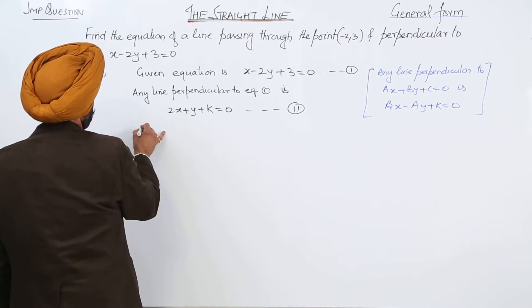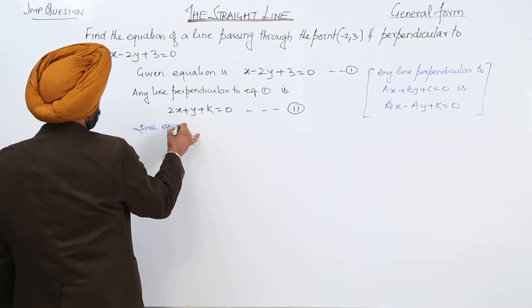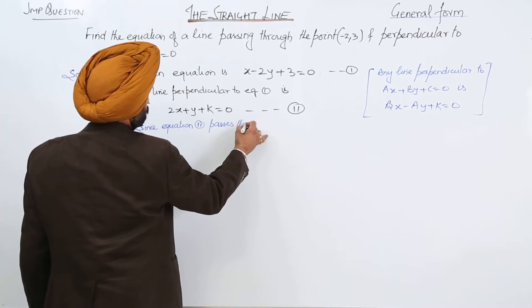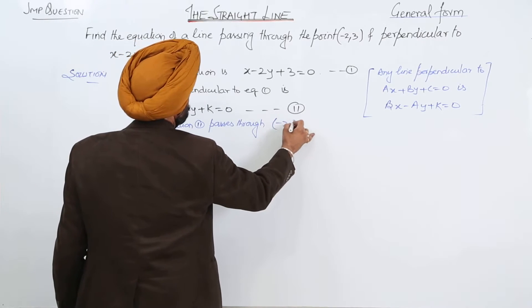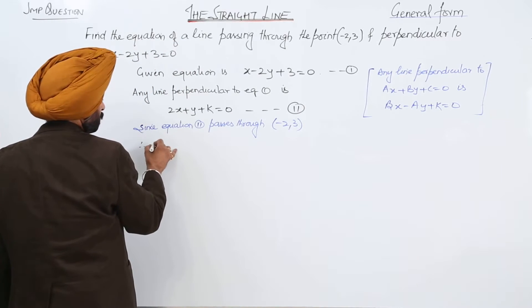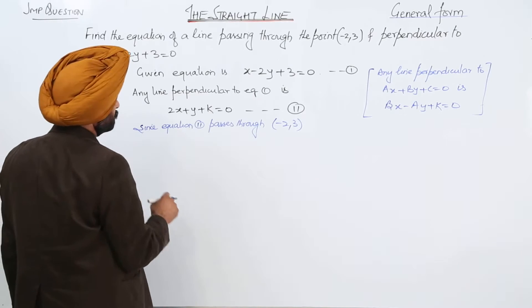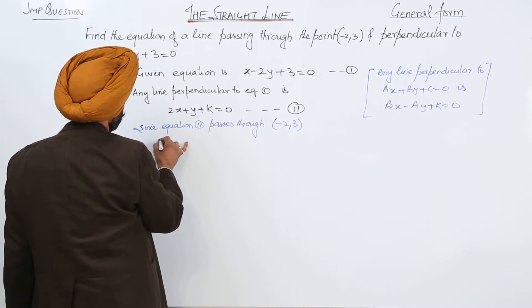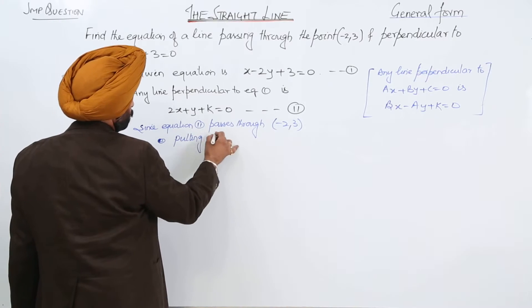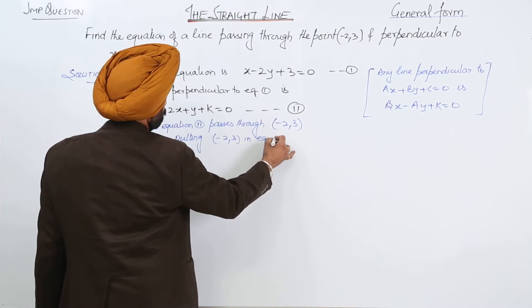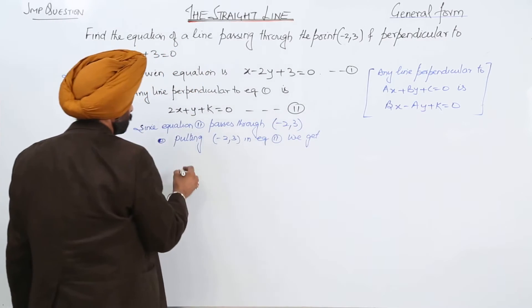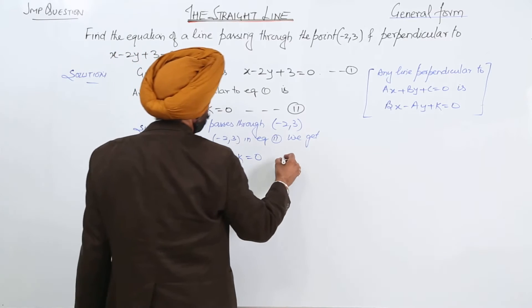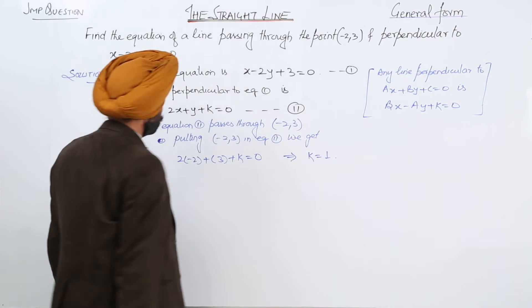Since equation 2 passes through minus 2 comma 3, putting minus 2 comma 3 in equation 2, we get 2 times negative of 2 plus 3 plus k is equal to 0, or we are getting k is equal to 1.